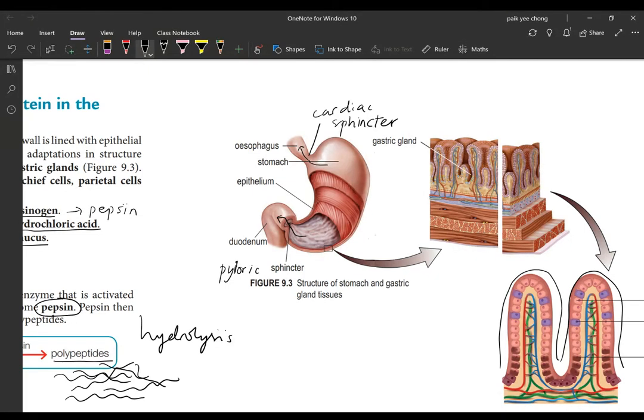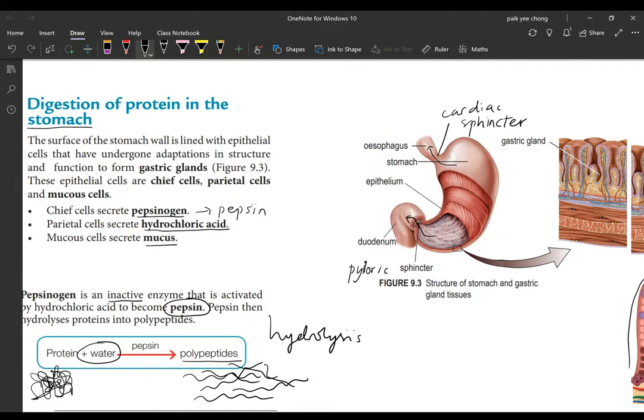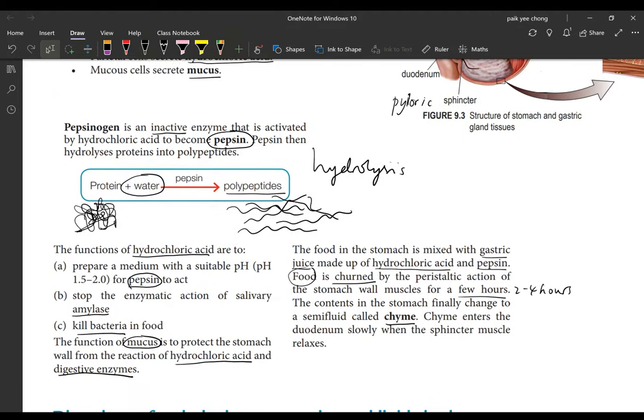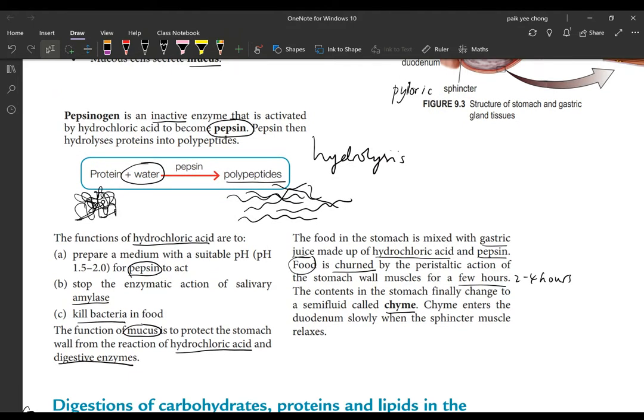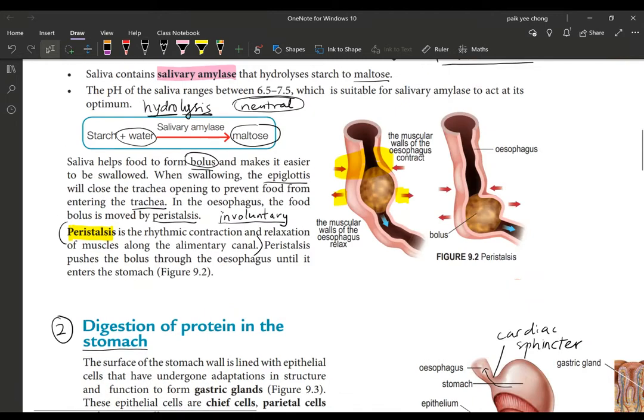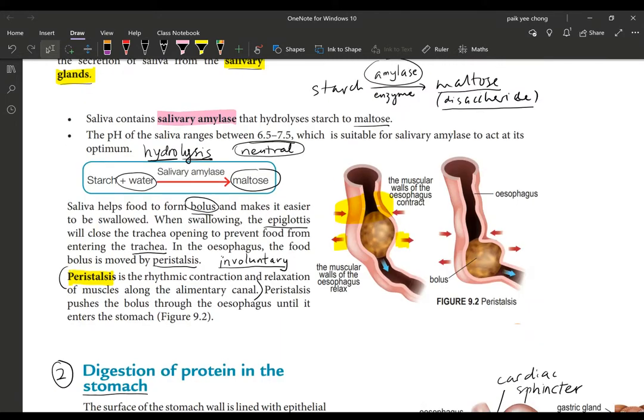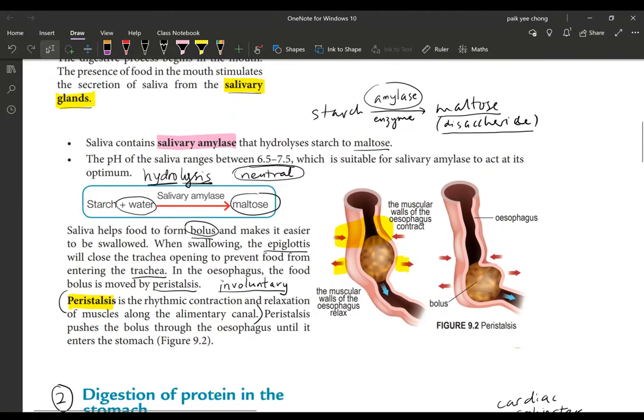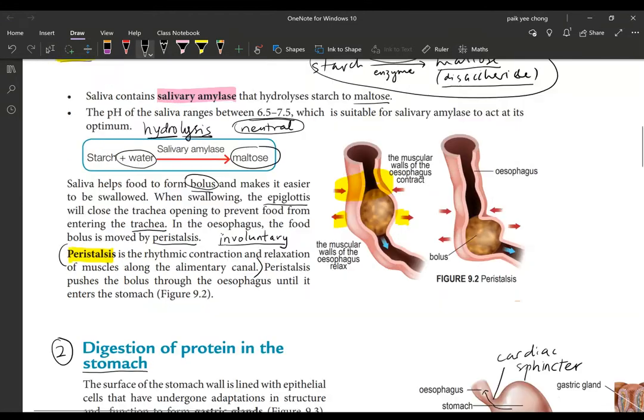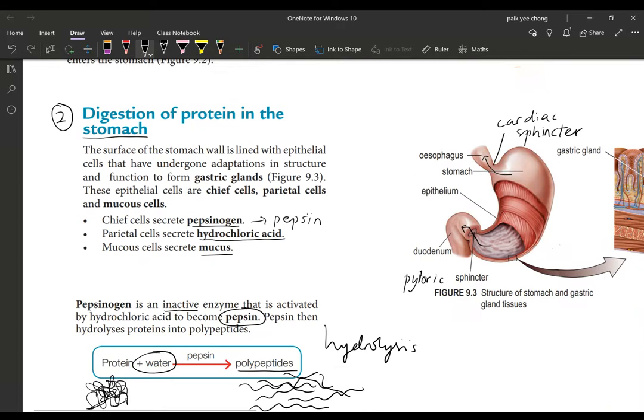That's about it. We have gone through the digestion in the mouth and in the stomach. To recap, it's very simple for the mouth - you only have digestion of carbohydrate, specifically from starch to maltose.